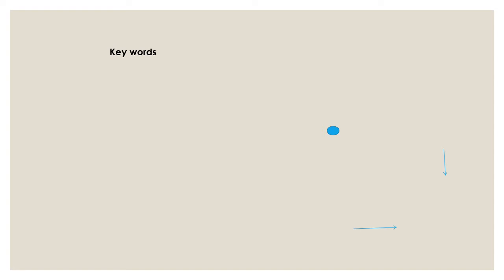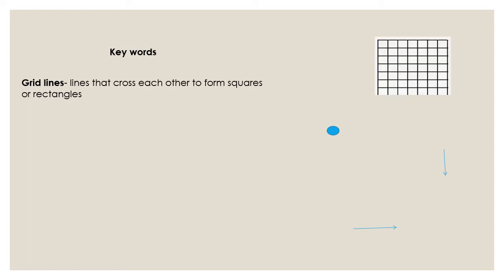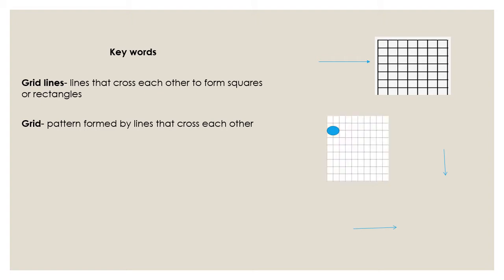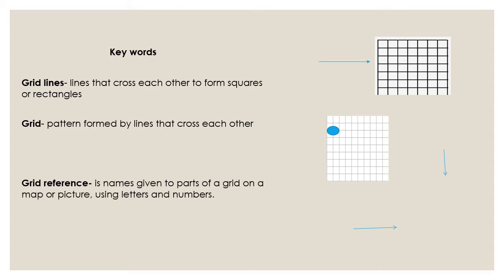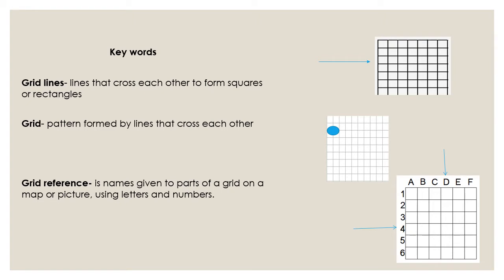Our key words for this week are grid lines. Grid lines are lines that cross each other to form squares or rectangles — a grid. A grid is a pattern formed by lines that cross each other. A grid reference is a name given to parts of a grid on a map or picture using letters and numbers.